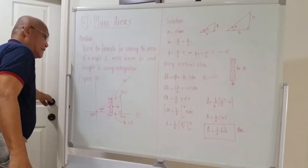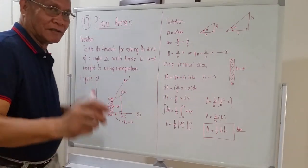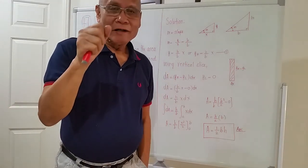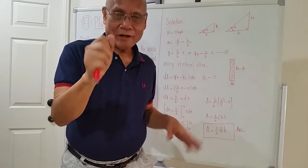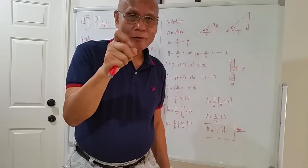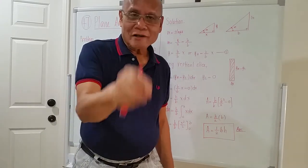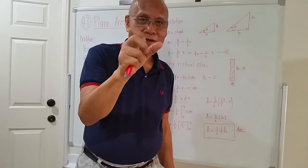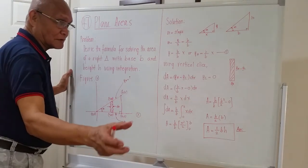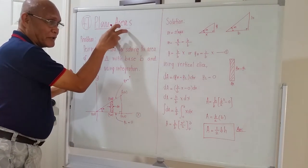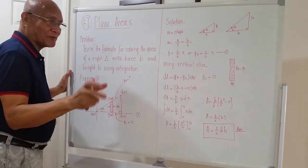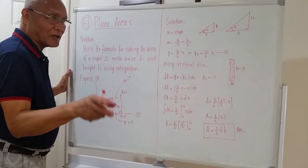Good afternoon. My topic this afternoon will be an example problem and how to derive the formula for taking the area of the right triangle. We will derive the formula using integral calculus. Topic number 47, plane areas — an example problem on how to derive the formula for taking the area of the right triangle.